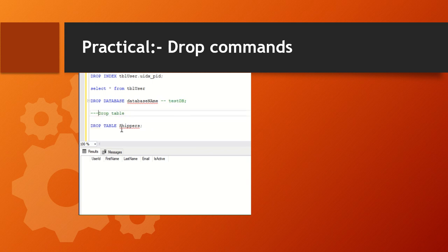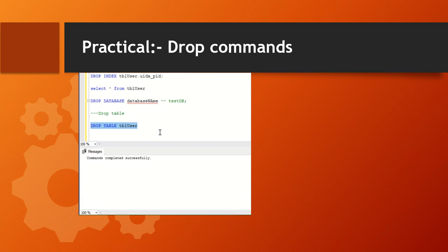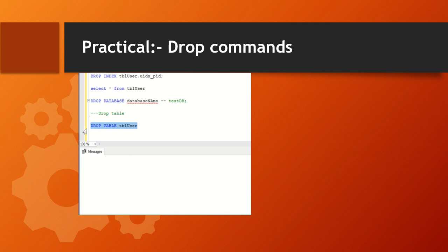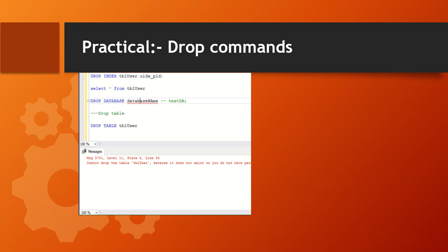For DROP DATABASE, we are not going to execute it now. For DROP TABLE, the command is DROP TABLE tbl_user. The table currently has no data. After executing the statement, it clears all the structure, all the data, all indexes, and everything related to the table. If you execute a SELECT statement after dropping, you will get an 'invalid object name' error. If you try to drop it again, SQL will tell you it cannot be dropped because either you don't have permission or the object does not exist.